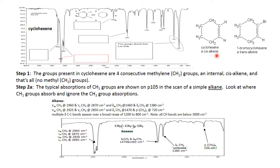For comparison, here is a structure of 1-bromocyclohexene, which has trans stereochemistry. Again, both doubly bonded carbons have two different substituents: a hydrogen and a carbon on one, and a bromine and a carbon on the upper carbon. Bromine has a higher atomic number than carbon, so bromine is higher priority on the upper carbon. On the lower carbon, carbon is higher priority. When the higher priority groups are on opposite sides of the double bond, that's described as a trans alkene.